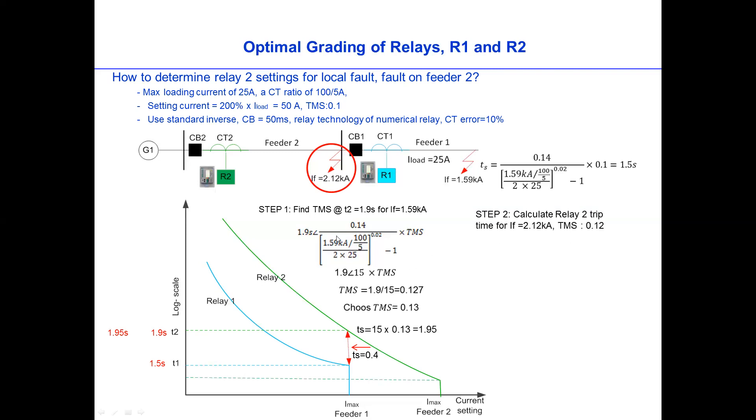And then the next step is, because this is for fault at the remote end. Now, the step is to calculate Relay 2 trip time for local fault. So now we come back to the question here. On this local fault. Since we have the TMS value 0.12, or we can choose 0.13. Then we can calculate here. Now we just need to change the fault current here. Instead of 1.59, we just change it to 2.12. And then the rest is the same.